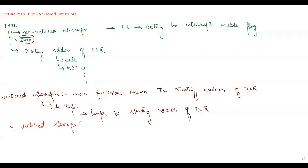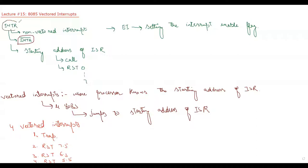The four vector interrupts are: Trap, RST 7.5, RST 6.5, and RST 5.5. You have to remember that INTR and these four interrupts — all five — are hardware interrupts, meaning there is a specific dedicated pin for each of these interrupts.